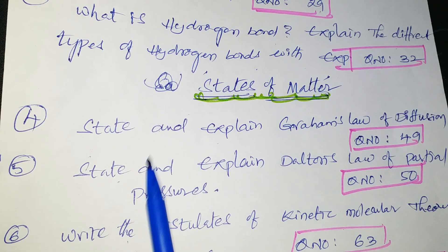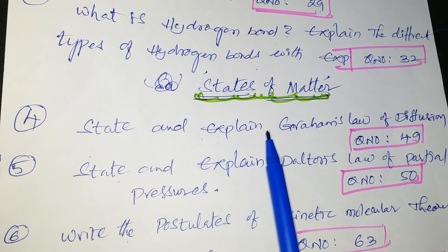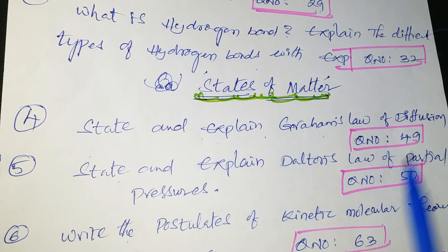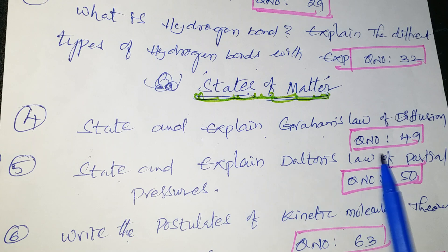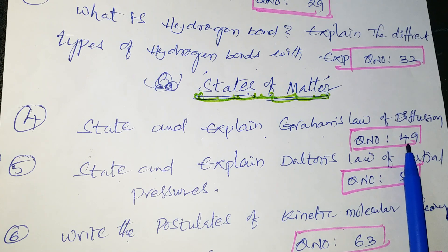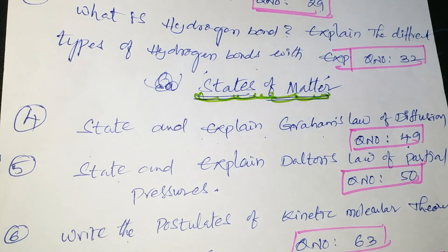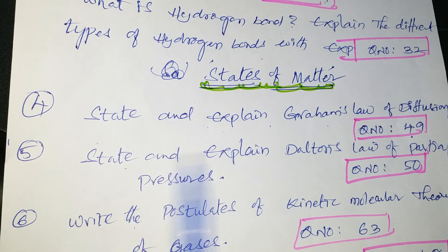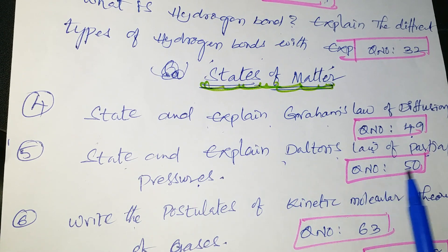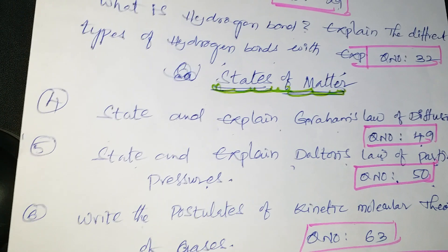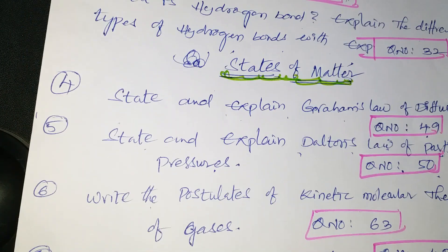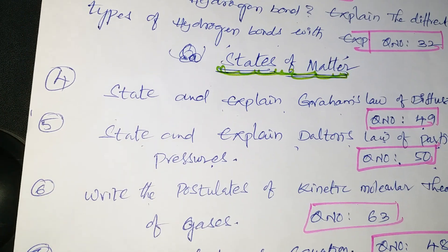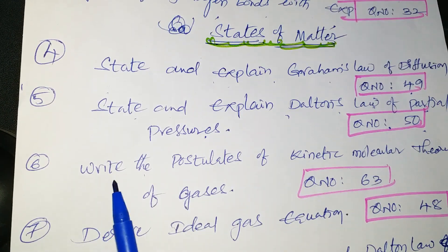From states of matter: state and explain Graham's law of diffusion — question number 49. Next question: state and explain Dalton's law of partial pressures — question number 50, from the Telugu academic textbook and other material.